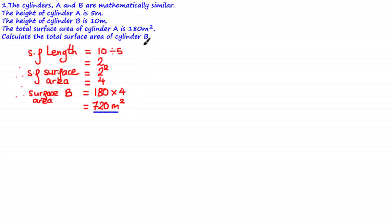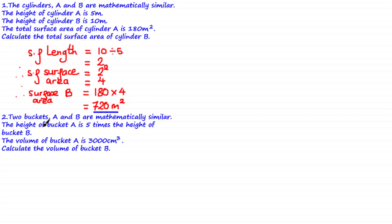Having an idea of which shape is larger is useful in choosing whether to multiply or divide by the scale factor. In the next example: two buckets A and B are mathematically similar. The height of bucket A is five times the height of bucket B. The volume of bucket A is 3000 centimeters cubed. Calculate the volume of bucket B.